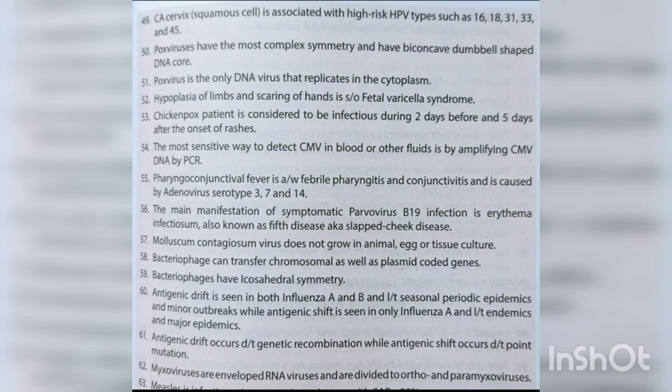Molluscum contagiosum virus does not grow in animal, egg or tissue culture. Bacteriophages can transfer chromosomal as well as plasmid-coded genes and have icosahedral symmetry. Antigenic drift is seen in both influenza A and B, leading to endemics and major epidemics; antigenic drift occurs due to point mutation while antigenic shift occurs due to genetic recombination.